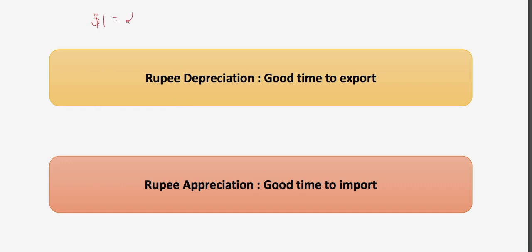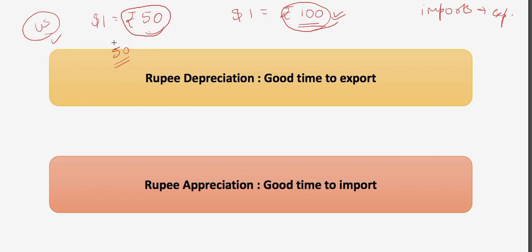Now suppose dollar one equals rupees 50 earlier when the economic times were not good, rupee depreciated and now the exchange rate is dollar one equals rupees 100. See, earlier when it was rupees 50 equals one dollar, you could purchase the same good in US for rupees 50, and now you will be able to purchase the same good in US worth rupees 100.